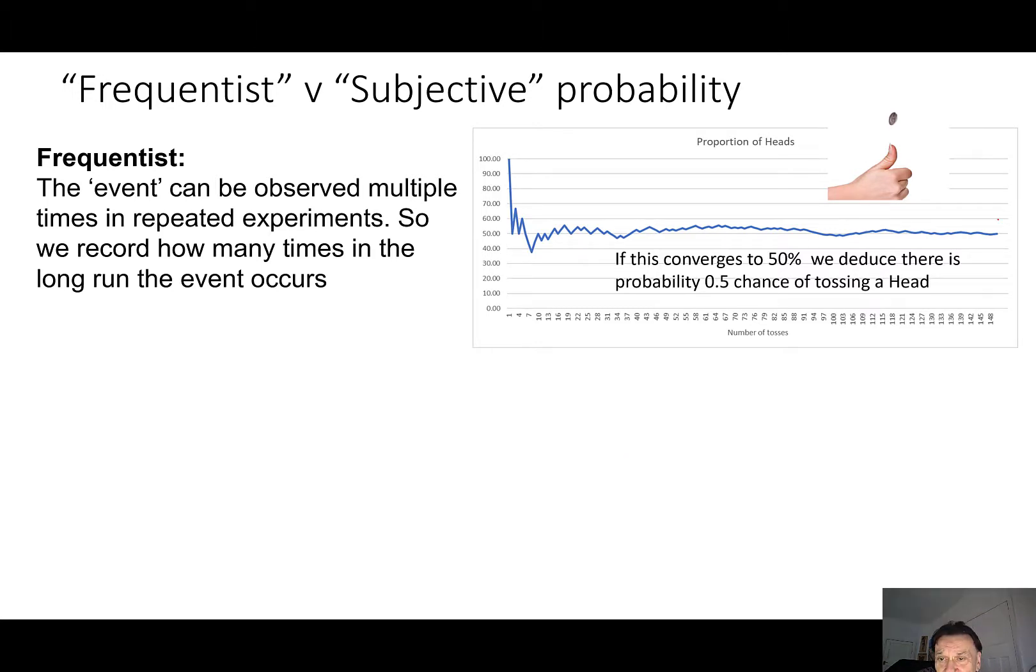But notice that actually if we'd only tossed it, let's say, 90 times, the cutoff point would have been here. Then actually it looks like it's converging on a number which is above 50%. So we would have actually had to conclude that the probability of tossing a head was about 51% or something like that. So there's a warning here that even the frequentist approach doesn't give you the kind of objectivity that people normally think of. There's always subjectivity in where you cut off the experiment essentially.